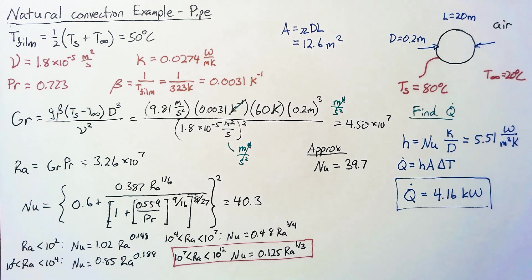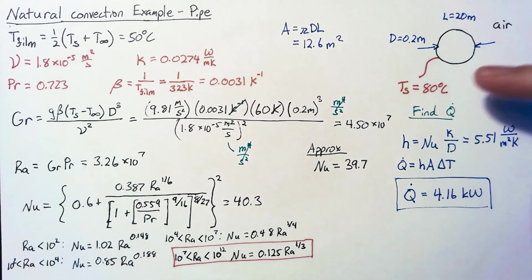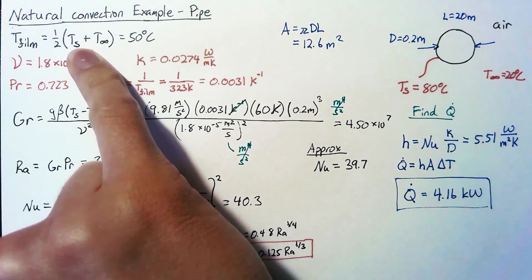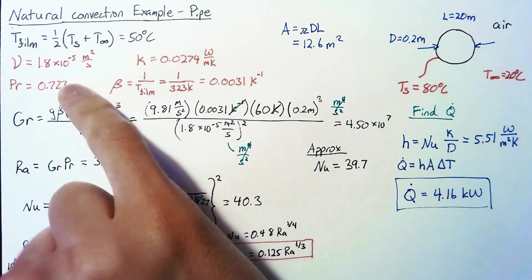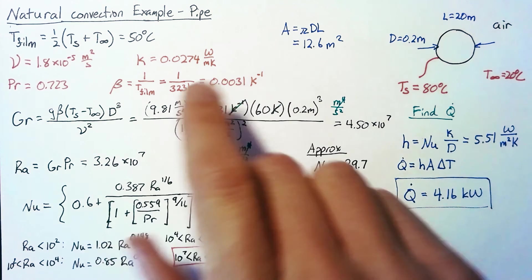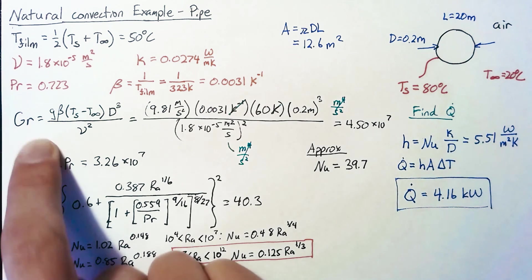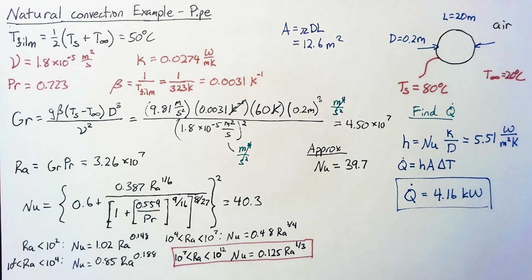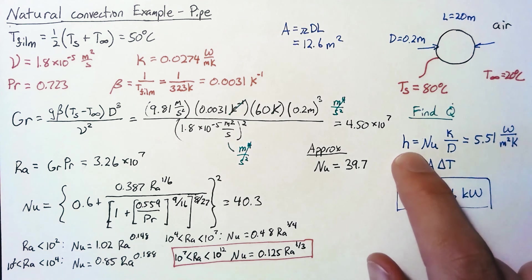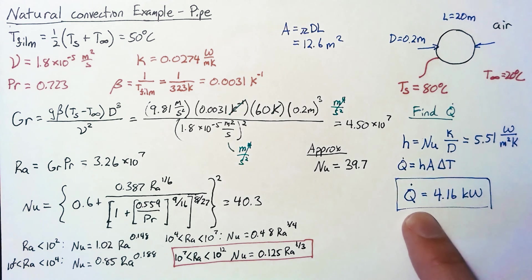So for most of this, the process is pretty straightforward. We're going to identify our film temperature, we're going to use that value to calculate our fluid properties, calculate our Grashof number, our Rayleigh number, and our Nusselt number all in turn. And then once we have that Nusselt number, that's everything we need to go ahead and calculate h and our Q dot.